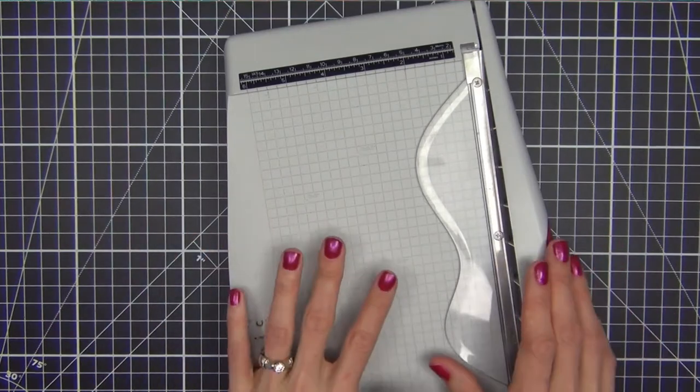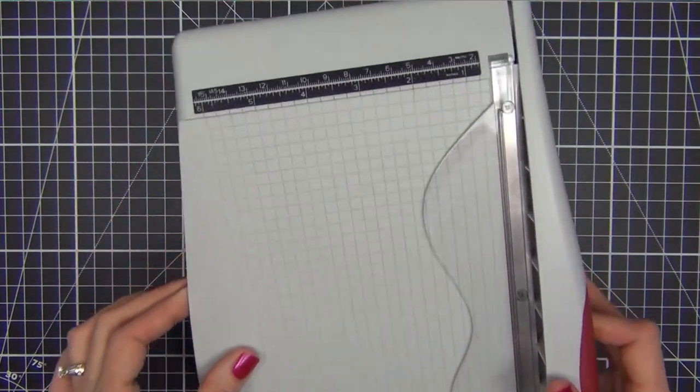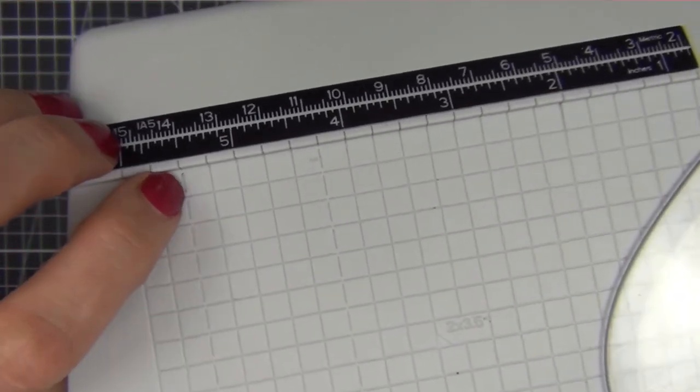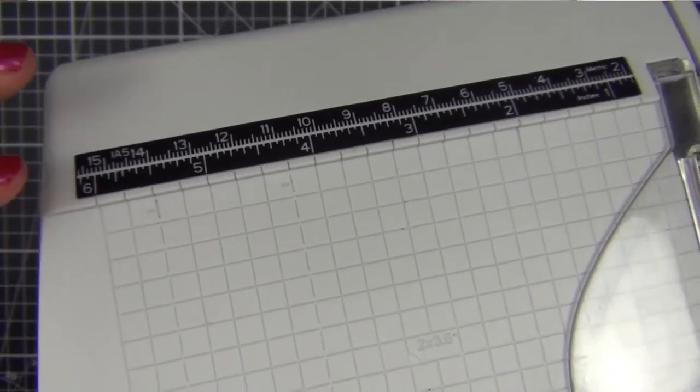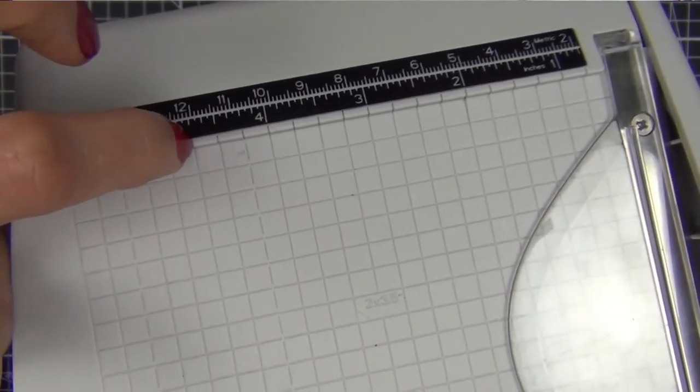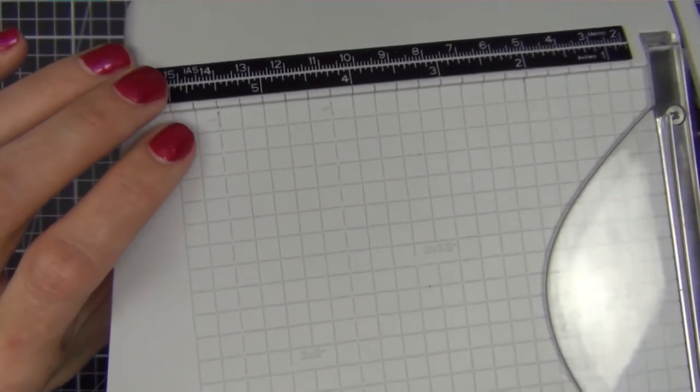One thing I want to say about this particular trimmer is when you go to line up your paper and measure it, you want to be very aware of where you're placing your paper. This has indents every quarter inch so you can easily line up your paper and cut and you don't have to think too much about it.